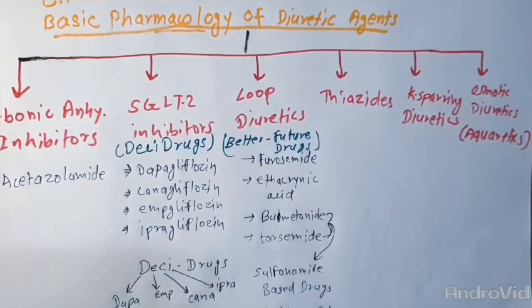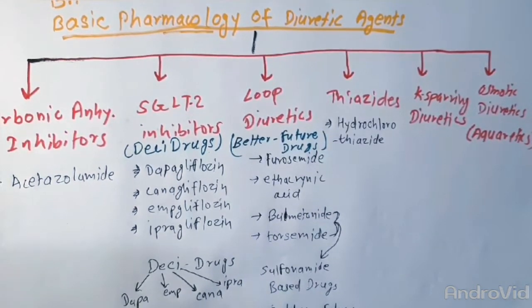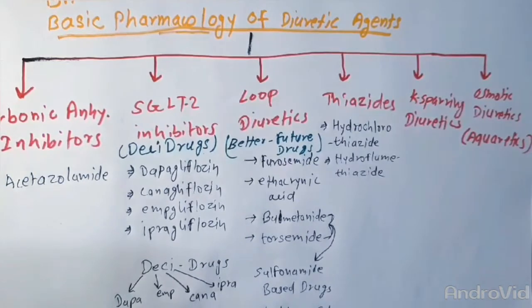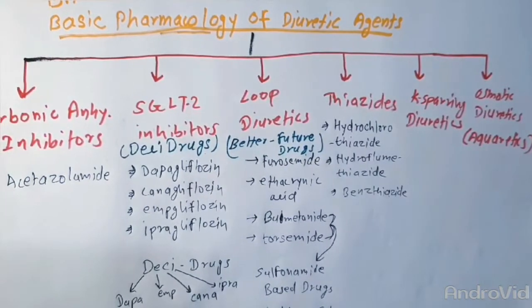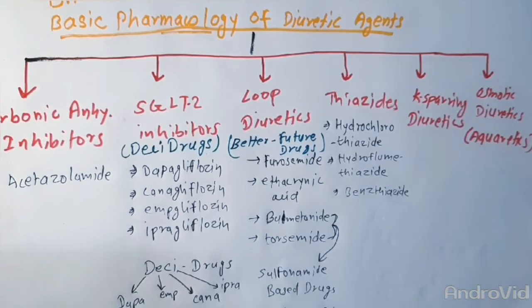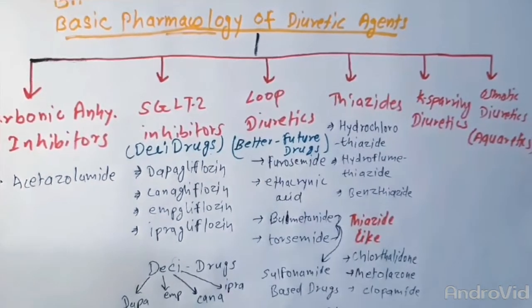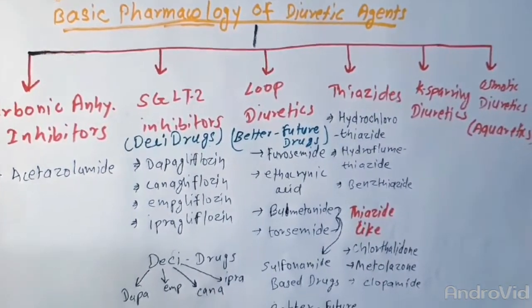The thiazides include many drugs, but the most important to remember are hydrochlorothiazide, hydroflumethiazide, and benzthiazide. Some thiazide-like drugs which also block the sodium chloride co-transporter are chlorthalidone, metolazone, and clopamide.